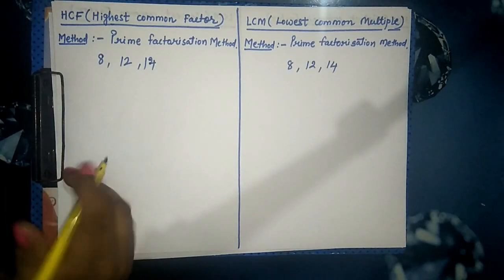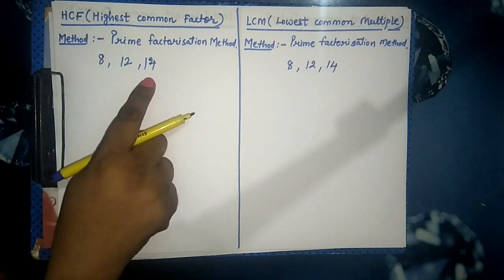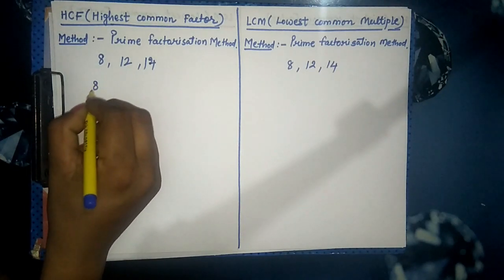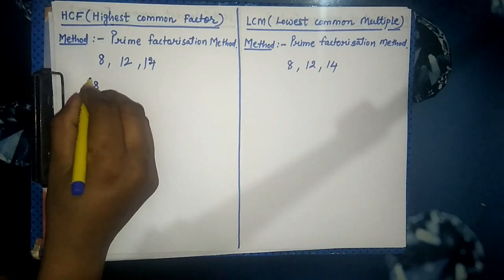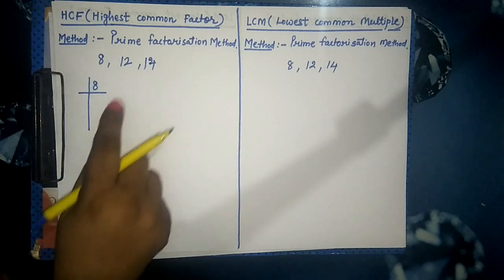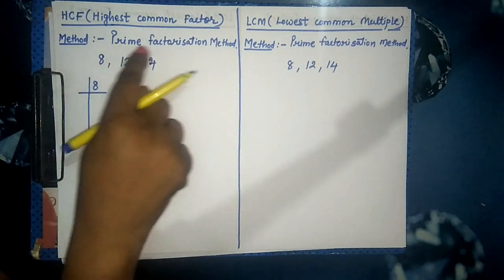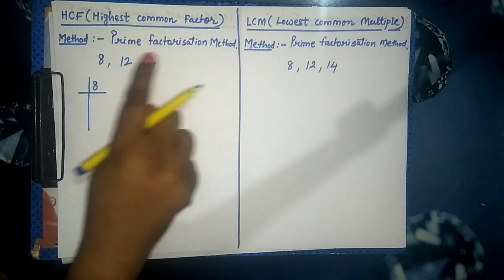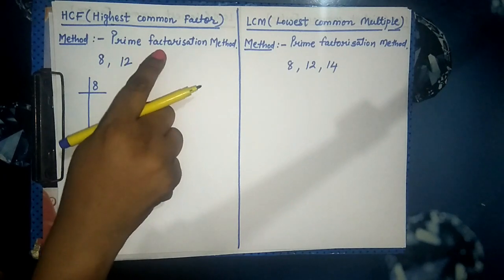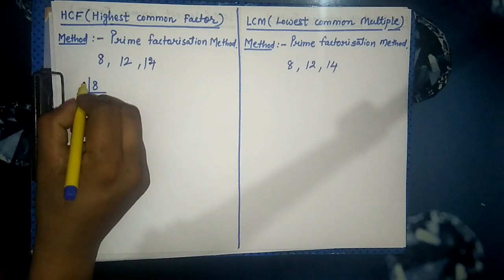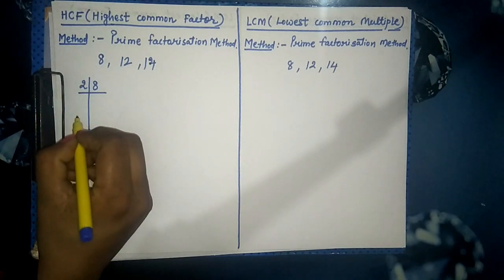I am taking the numbers 8, 12, and 14 to find out the HCF and LCM. In Step 1, we have to individually divide these three numbers using the division method. We write the numbers individually. For the first number, 8, we use only prime factors to divide. We take the smallest possible prime factor, which is 2.